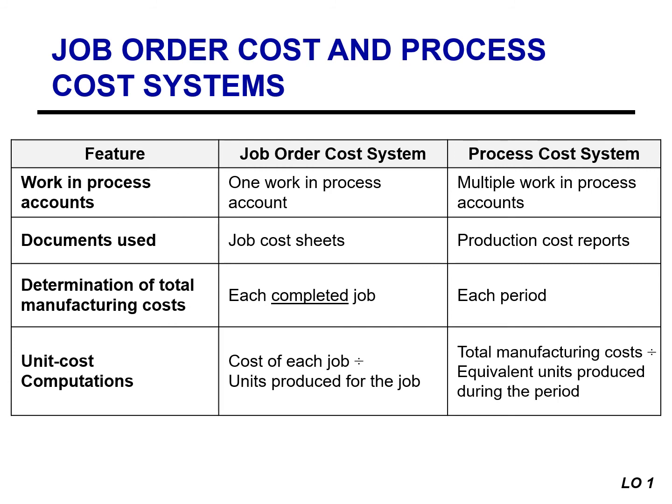Equivalent units are an important concept in process costing. The basic idea is to total all the costs incurred in a department during the period and spread those costs uniformly to all the units processed in that department. A complication arises because departments typically have some partially completed units in ending inventory. It doesn't seem reasonable to count these as equivalent to fully completed units, so they are translated into an equivalent number of fully completed units. This concept will be discussed in more detail later.